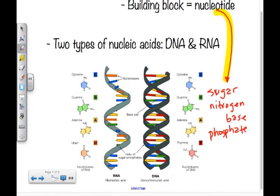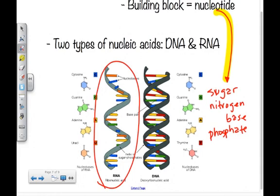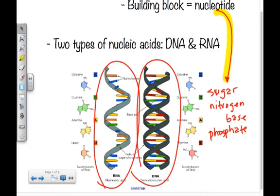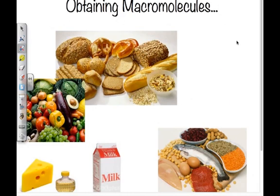Nucleotides are the individual structural units that compose nucleic acids. There are two types of nucleic acids: DNA and RNA. Each encodes specific information to create structures in your cell and how your cells should function. The blueprints of life — the instruction manual — is housed in RNA and DNA, and it's the sequence of nucleotides that gives specific instructions on what to do and when to do it inside the cell.